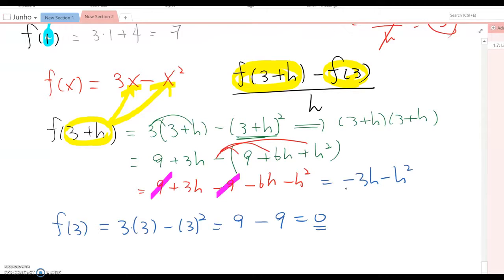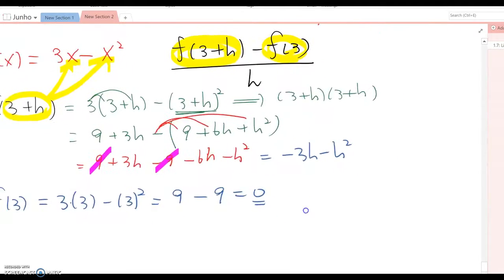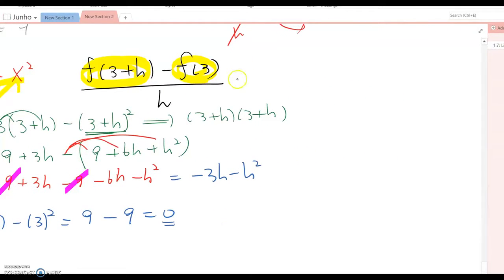We are ready to plot this value into this formula: negative 3h minus h squared. Then this becomes negative 3h minus h squared minus 0 over h.